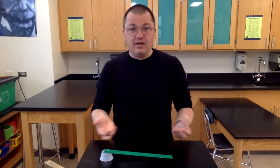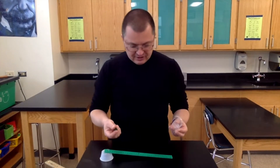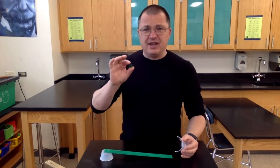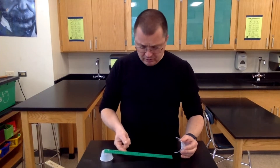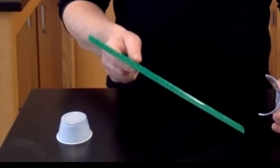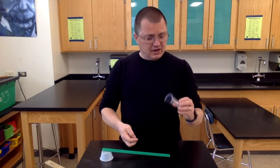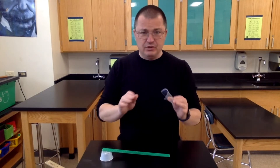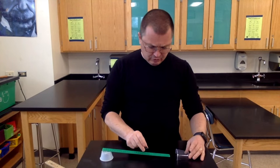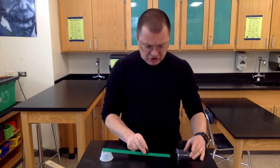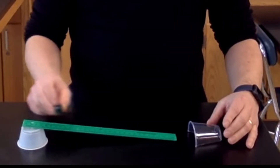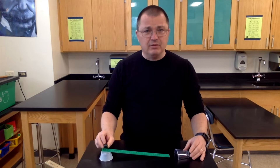Now there are a lot of things we could change about this to turn it into an experiment. We could change the size of the marble, the angle of the ramp, or the size of the cup. We're not going to do any of that. Today what we're going to do is change the height up the ramp that we start the marble.